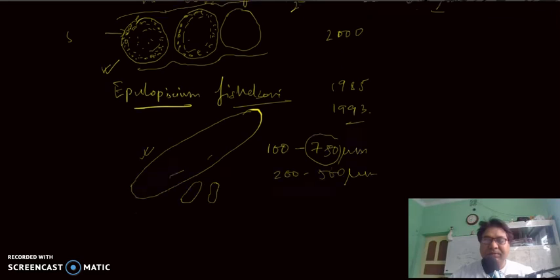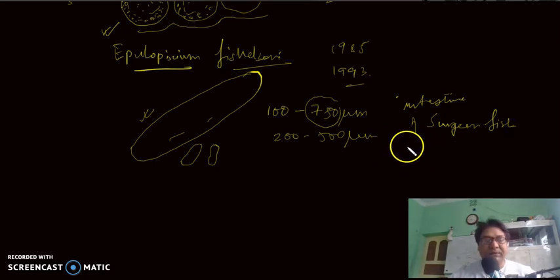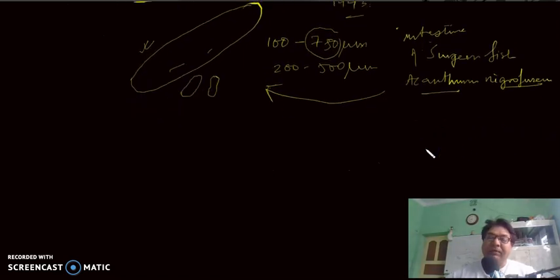Epulopiscium fischelson was isolated from the intestine of surgeonfish, the scientific name of which is Acanthurus nigrofuscus. From this fish's intestine this bacterium is isolated. It is an infectious bacteria that causes infection in young juvenile fishes through the defecation product of adult fish.